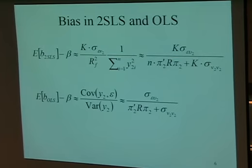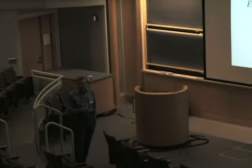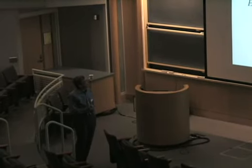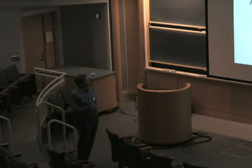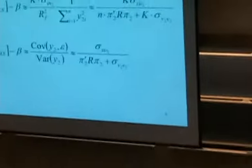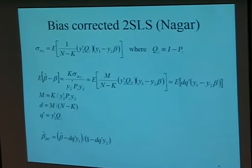The weak instrument problem arises when R-squared is close to zero—that is, when pi is close to zero. Then the denominator doesn't blow up fast enough, and you can let R-squared remain constant or go to zero, so you have a bias in the numerator that the denominator doesn't offset. So both many instruments and weak instruments lead to bias in two-stage least squares.